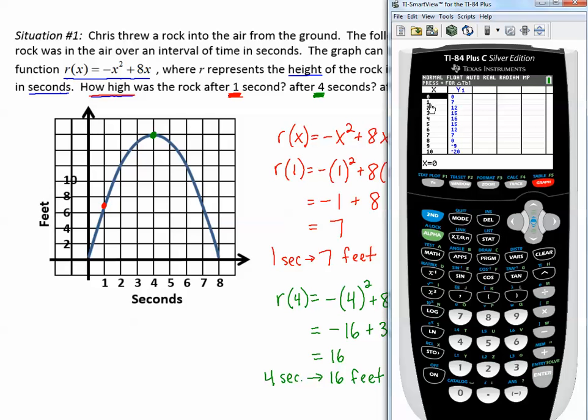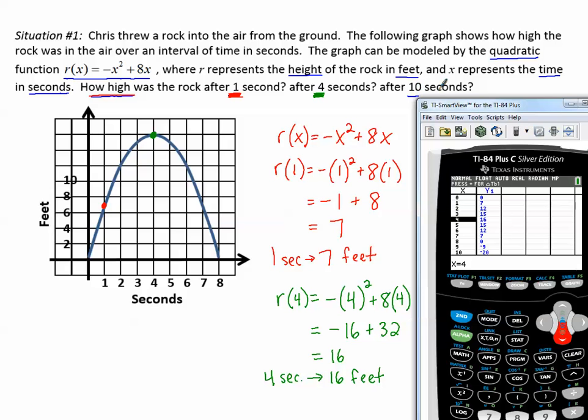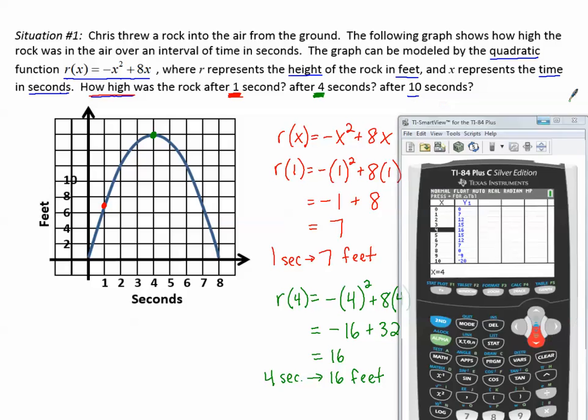So we can see that at one second, the rock is seven feet high, just like when we evaluated it by hand. At four seconds, the rock was 16 feet high. Well, notice the last question says after 10 seconds. So looking down here at 10 seconds, I see negative 20. So without having to plug it in and evaluate by hand, my calculator says at 10 seconds, it's at negative 20. Let's talk about that for a minute.